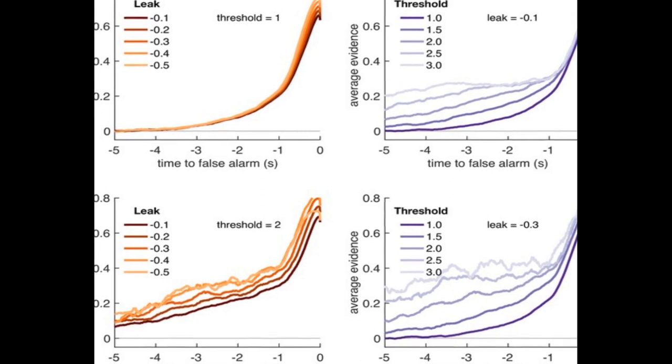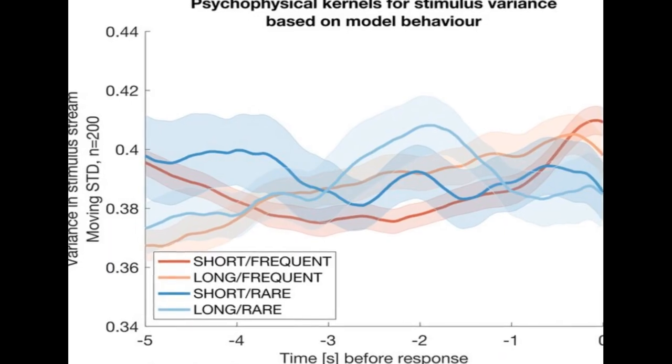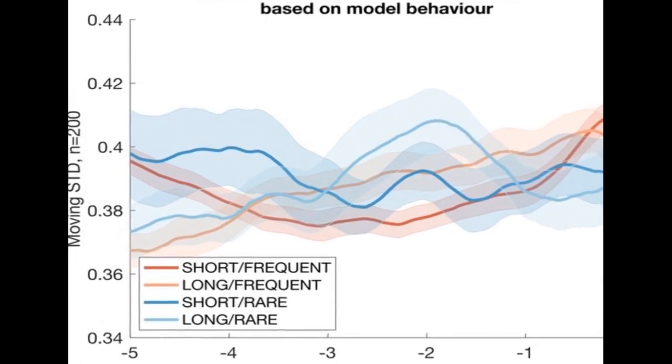The CPP becomes more sensitive to fluctuations in sensory evidence when large shifts in evidence are less frequent, and is primarily sensitive to fluctuations in decision-relevant sensory input.